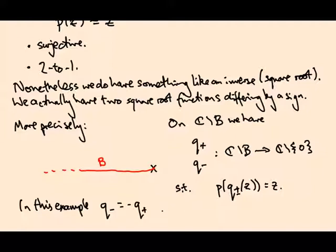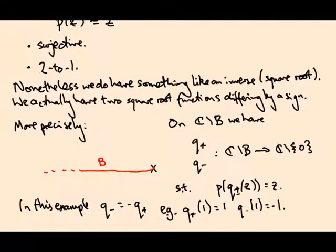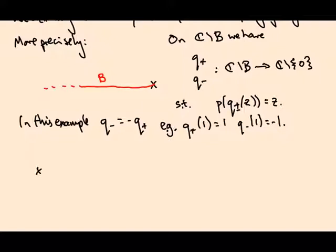In this particular example, we're covering that q₋ is minus q₊. For example, q₊ of one is the positive square root of one, that's one.